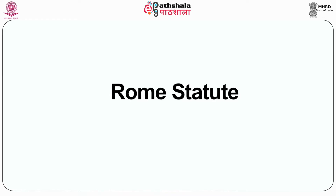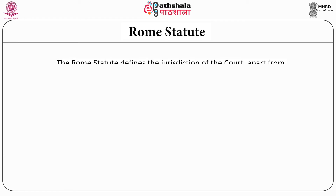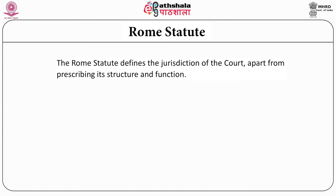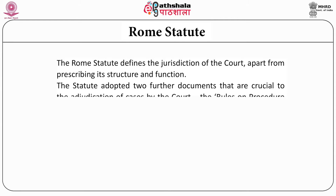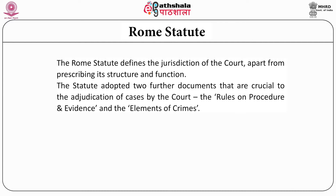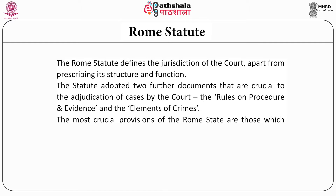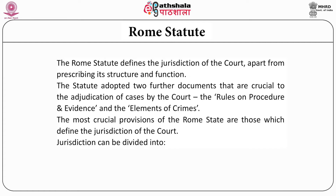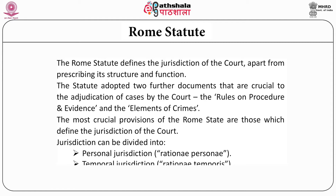Here we come to the Rome Statute, which is essential to understand the functioning of international courts and tribunals. The Rome Statute is the founding document that defines the jurisdiction of the court, apart from prescribing its structure and function. When the statute came into force, two further documents were adopted that are crucial to the adjudication of cases by the court: the rules on procedure and evidence, and most importantly, the elements of crime. The most crucial provisions of the Rome Statute are those which define the jurisdiction of the court.